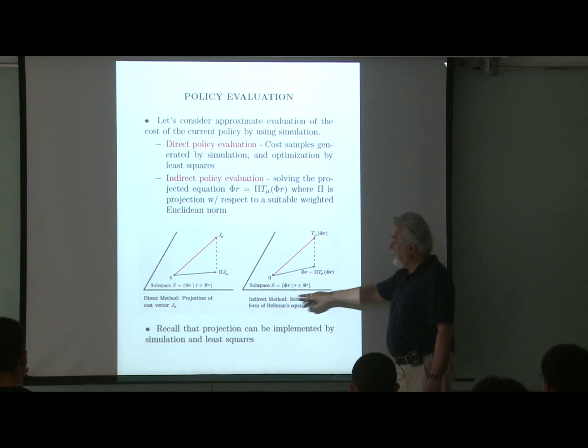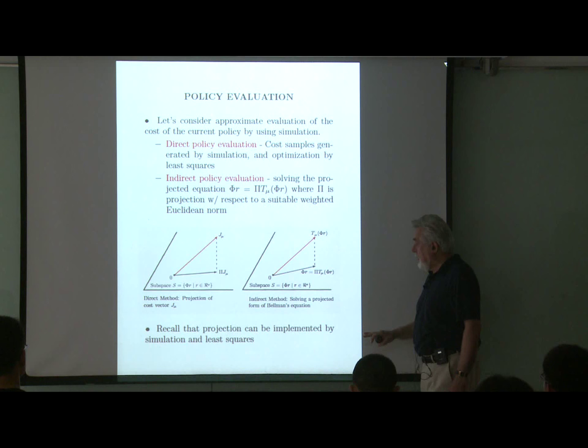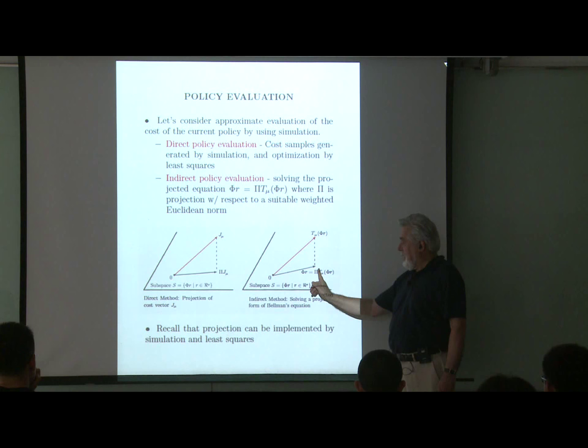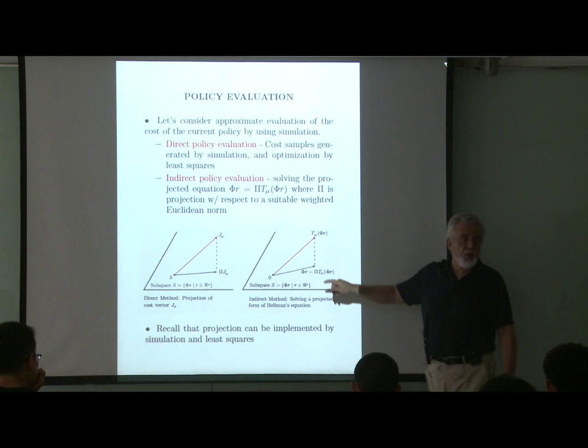The more popular method is the indirect method, whereby instead of projecting the solution, you project the equation itself. This is called the Galerkin method, and it amounts to solving a projected equation. If there was no approximation, we would not need a projection. So what we do is project the equation and try to find an r that satisfies it — meaning that when you apply T to it and then project down, you end up at the same point.